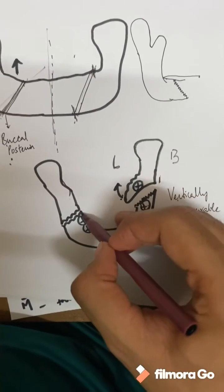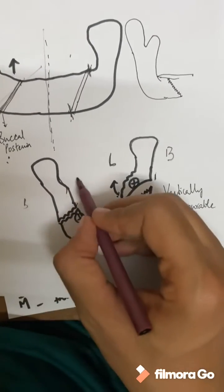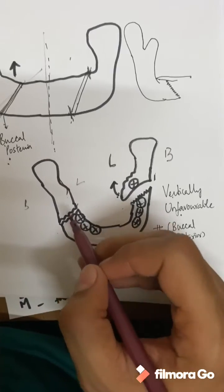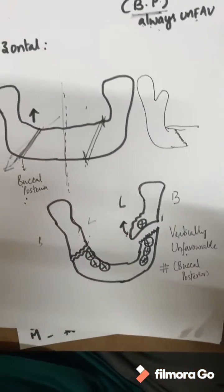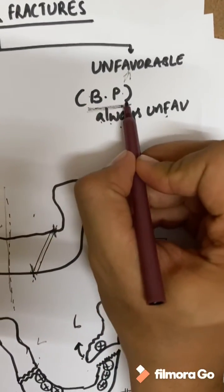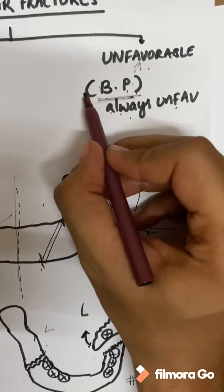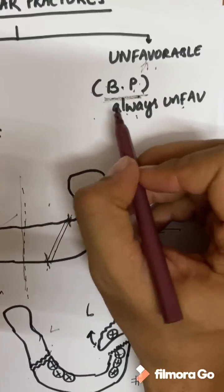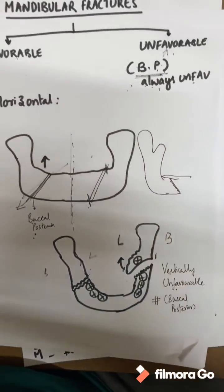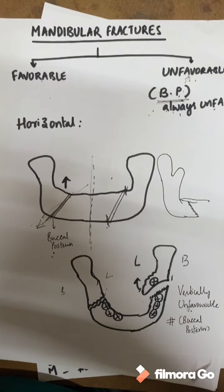If the fracture line is anterior to the lingual side — that is, if this is the buccal side, lingual side, and the fracture line is coming anterior to the lingual side — then it is a favorable fracture. So remember just one point: BP is unfavorable. Buccal posterior — if the fracture line running from buccal to lingual has the buccal side posterior, then it is an unfavorable fracture. This makes things very easy for PG entrance examinations.